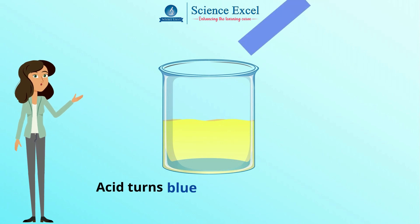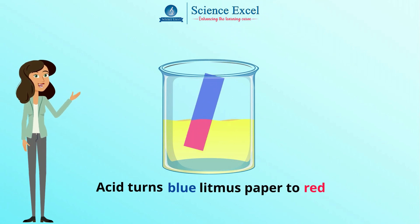Acid turns blue litmus paper to red. So what is litmus paper? And why are we using this? Litmus paper is an indicator which shows whether a solution is an acid.